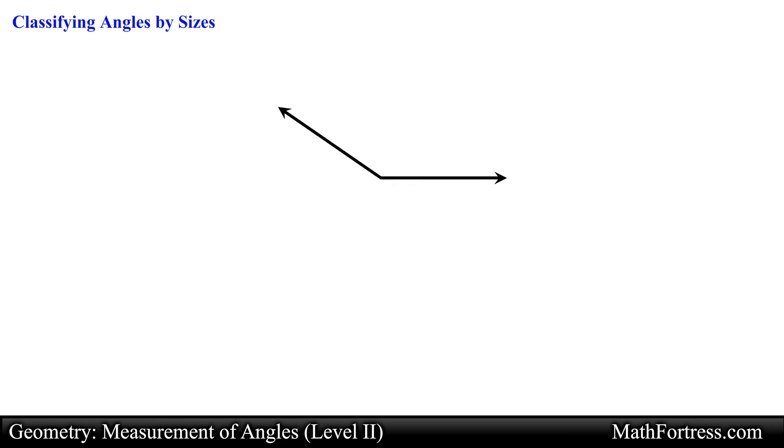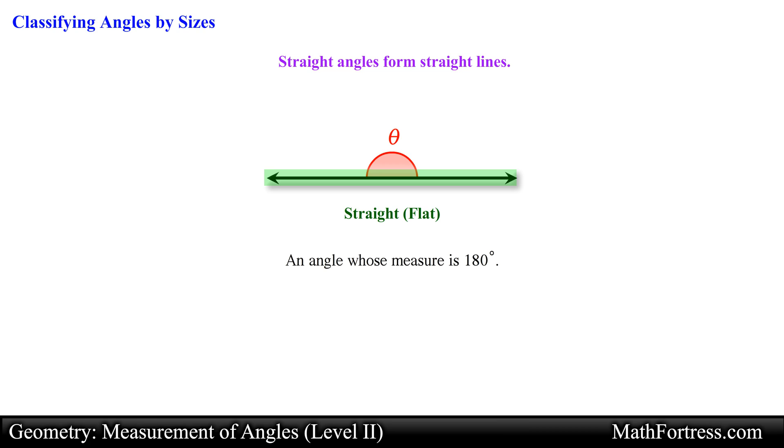Let's take a look at the next angle. A straight angle is an angle whose measure is 180 degrees. Notice that a straight angle forms a straight line. The angle shown can be classified as a straight angle. Either side of a straight angle could be considered to be the interior or exterior of the angle. This angle is also referred to as a flat angle since the sides of the angle are pointing in opposite directions. The two sides form a single straight line through the vertex of the angle.